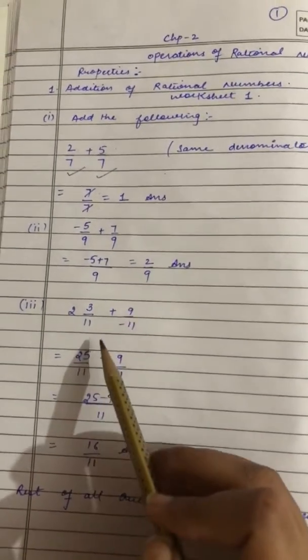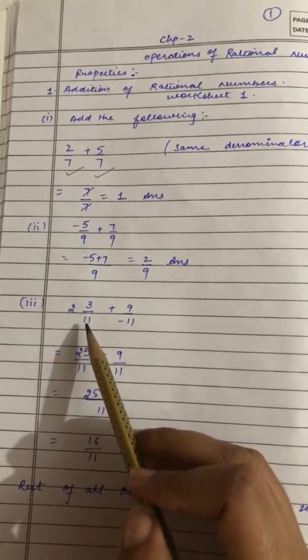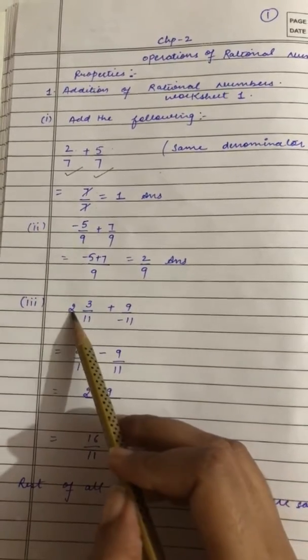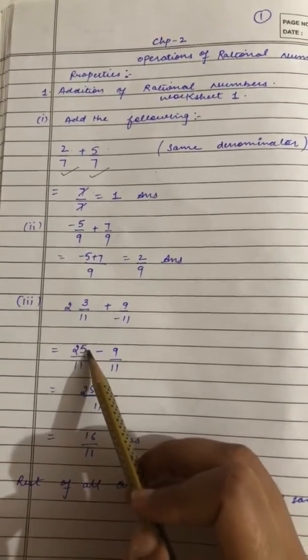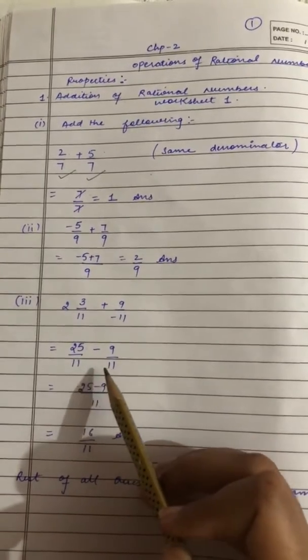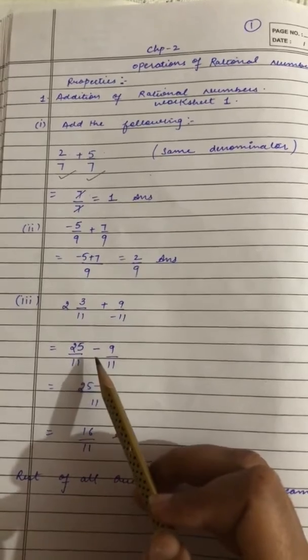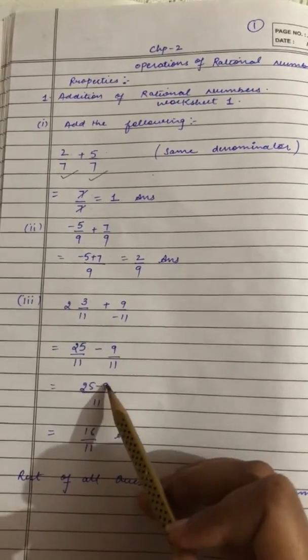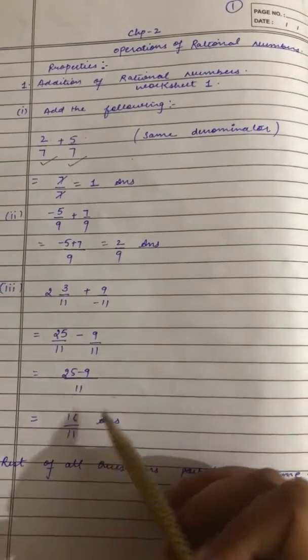Next question is here. This is a mixed fraction. So, let's do this. 11 times 2 is 22. 22 plus 3 is 25. 25 upon 11. The denominator is the same. So, let's add numerators as it is or subtract. This is getting the answer. And the other questions are the same.